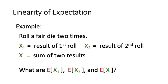For an example, suppose we roll a fair die two times. Let x1 be the result of the first roll, x2 be the result of the second roll, and x be the sum of the two results. We want to find E[x1], E[x2], and E[x]. For E[x1], each value 1 through 6 has a probability of 1/6, so E[x1] = 1×(1/6) + 2×(1/6) + ... + 6×(1/6) = 3.5.